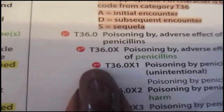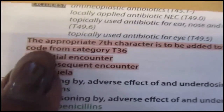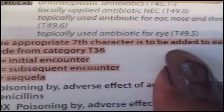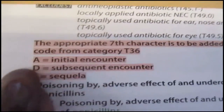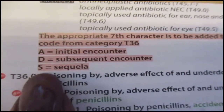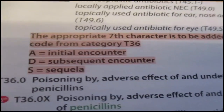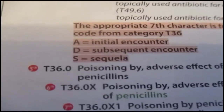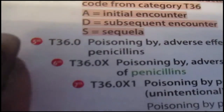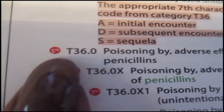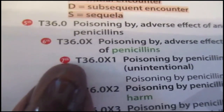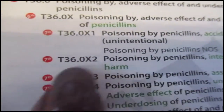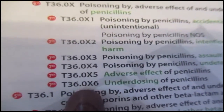There is a seventh digit, and there's a box that says the appropriate seventh character is to be added to each code from category T-36 — either A, D, or S. I'm going to break down that seventh digit definition in a later video. But I want you to understand how the tabular works, where it tells me T-36.0 expands to the fourth, to the sixth, to the seventh, showing me how far I need to go. That X in there is a placeholder for future growth.